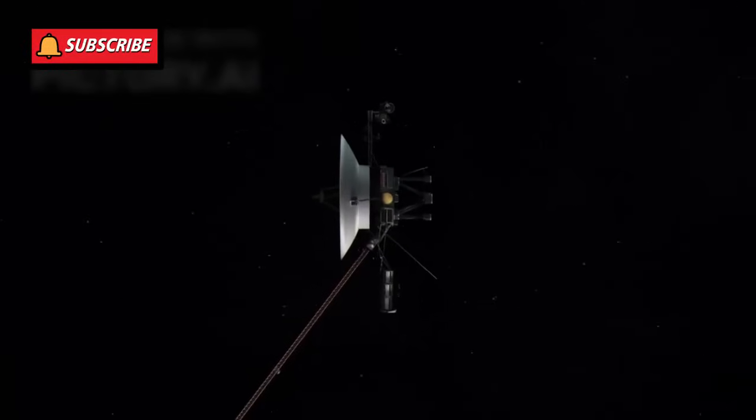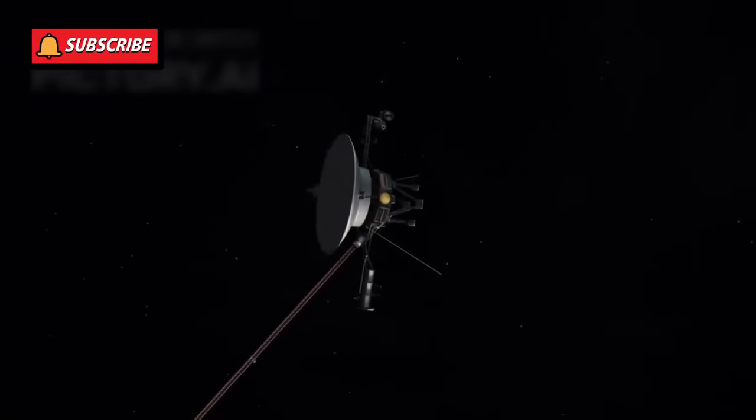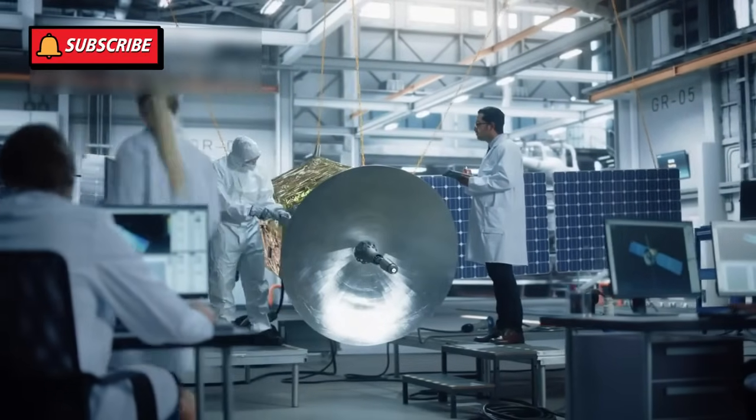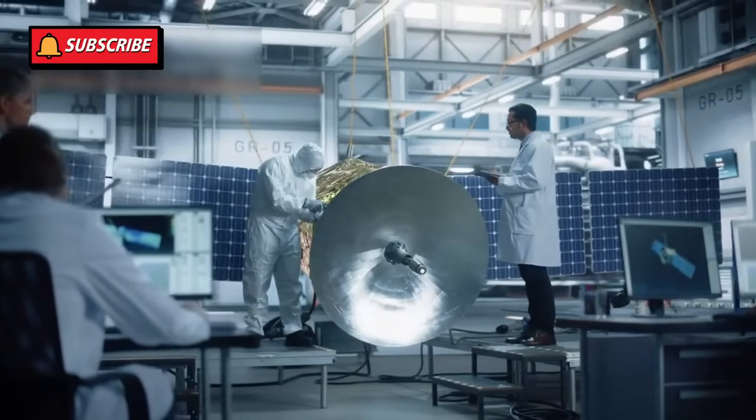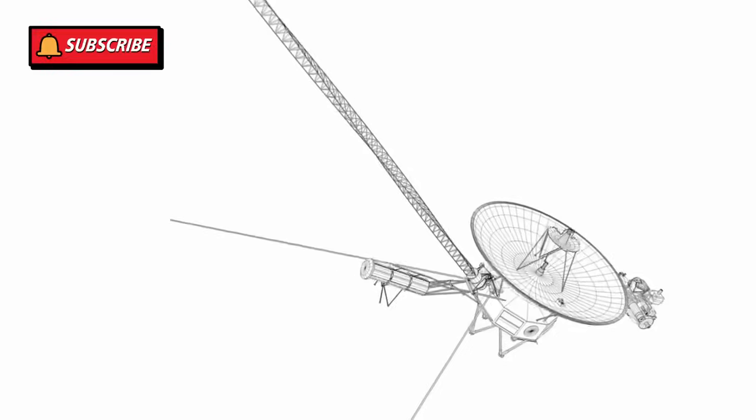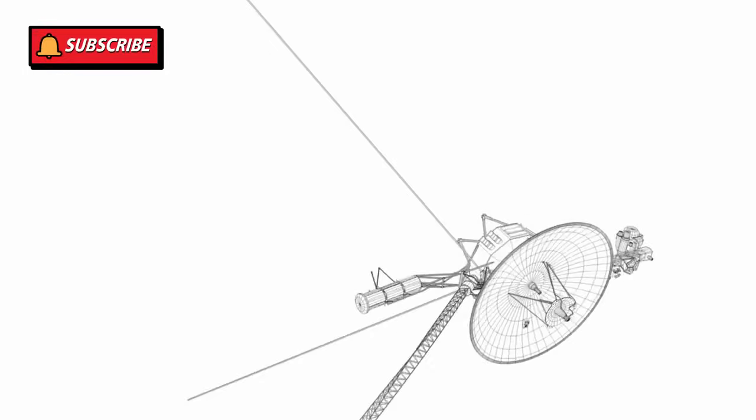In 2023, a minor glitch in Voyager's memory was corrected. NASA's engineers, using creativity and patience, rerouted how the probe stores data. It worked, and Voyager continued transmitting. A tiny fix, for a machine that's become a legend.